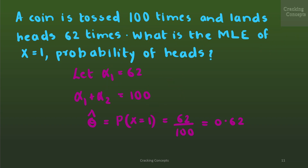For another example: a coin is tossed 100 times and lands heads 62 times. What is the MLE of the probability of heads? We take alpha_1 equal to 62 (number of heads) and alpha_2 as the number of tails, so alpha_1 plus alpha_2 equals 100. The MLE estimate theta-cap is alpha_1 divided by (alpha_1 plus alpha_2), which is 62 by 100, giving 0.62.